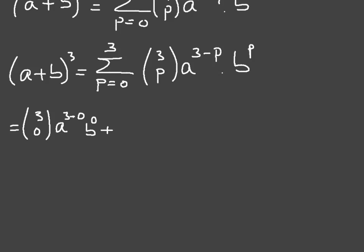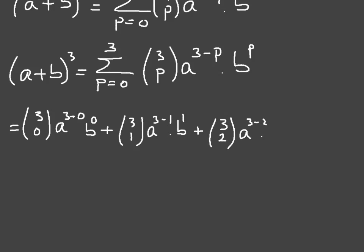The second term corresponds to p equals 1, which gives us the binomial coefficient (3, 1) times a to the power of 3 minus 1, times b to the power of 1. The third term, where p equals 2, gives us (3, 2) times a to the power of 3 minus 2, times b to the power of 2. Finally, the last term where p equals 3 gives us (3, 3) times a to the power of 3 minus 3, times b cubed.